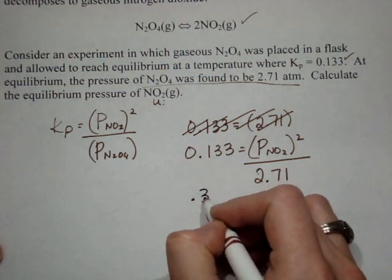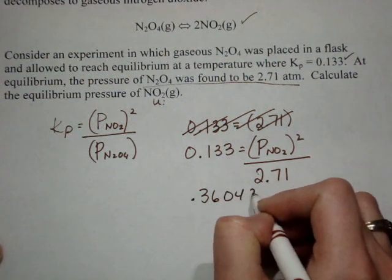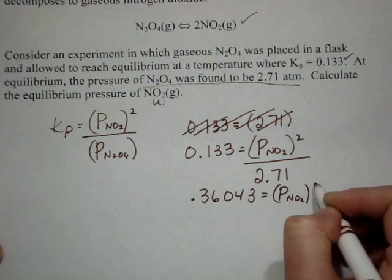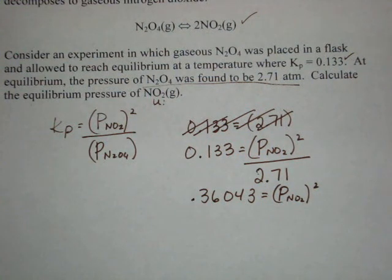That gives me 0.36043 equals P of NO2 squared. So I need to take the square root of both sides.